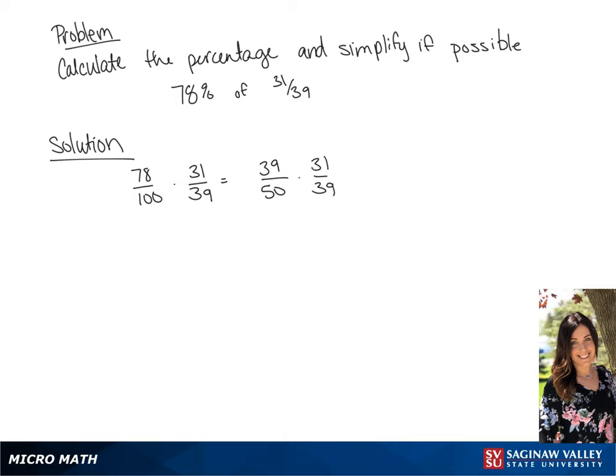The 39 is in both the numerator and denominator, so we replace that with 1. So 1 times 31 is 31, and 50 times 1 is 50. Our final answer is 31 over 50.